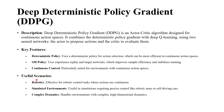Useful scenarios: for robotics, DDPG is effective for robotic control where many actions are continuous. For example, if a robot has to move a motor from left to right, we need to be more accurate — we can move across the whole circumference rather than discrete positions one, two, three. It's also useful in simulated environments requiring precise control like robotic arms or self-driving cars, and handles environments with complex high-dimensionality dynamics.